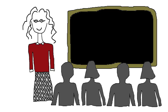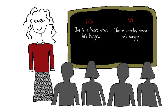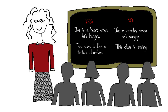At the beginning, start with the simplest, most obvious kinds of examples so students can identify the basic characteristics. Here's a yes example of figurative language: 'Joe is a beast when he's hungry.' And here is a no example: 'Joe is cranky when he's hungry.' It's important that your no examples not be so obvious that they're not taken seriously — you don't want participants to not really have to think to discern a difference. Here's another yes example: 'This class is like a torture chamber.' And a no: 'This class is boring.'